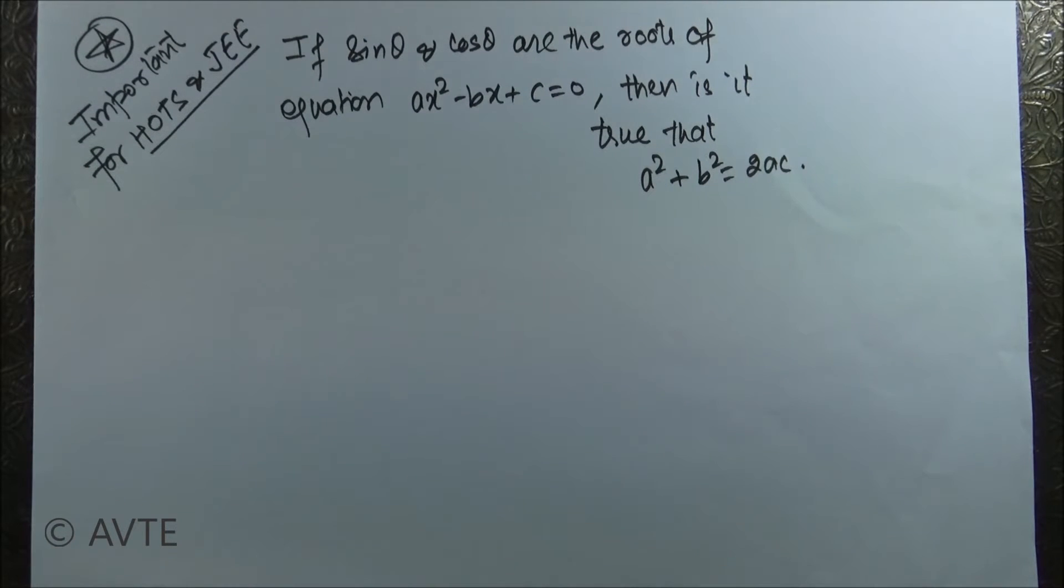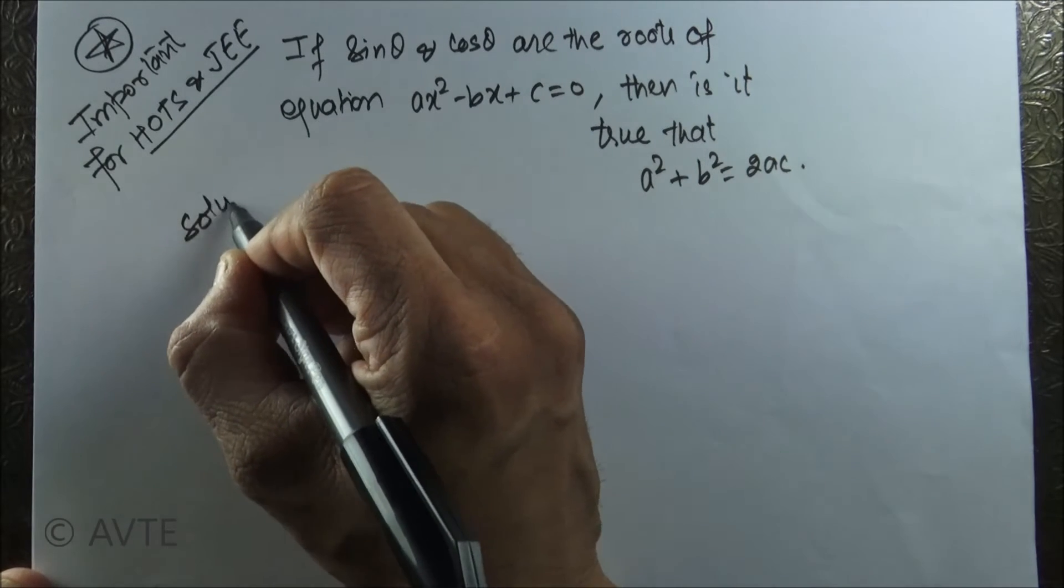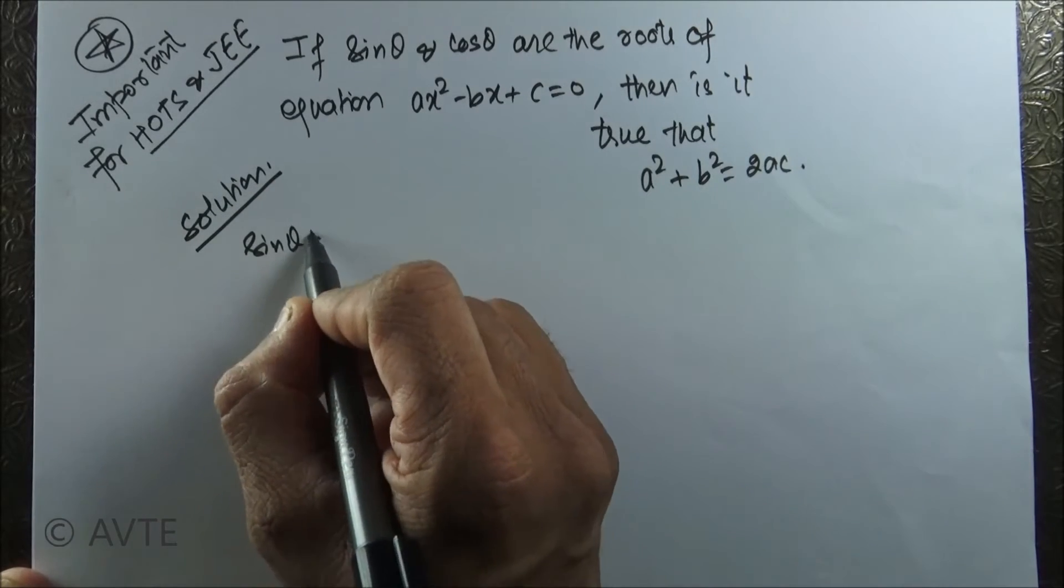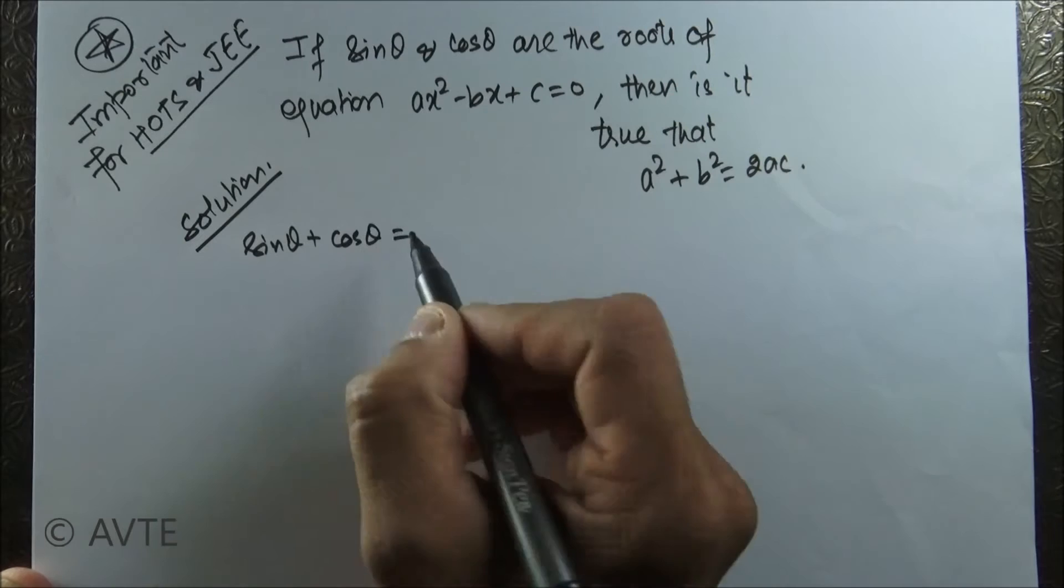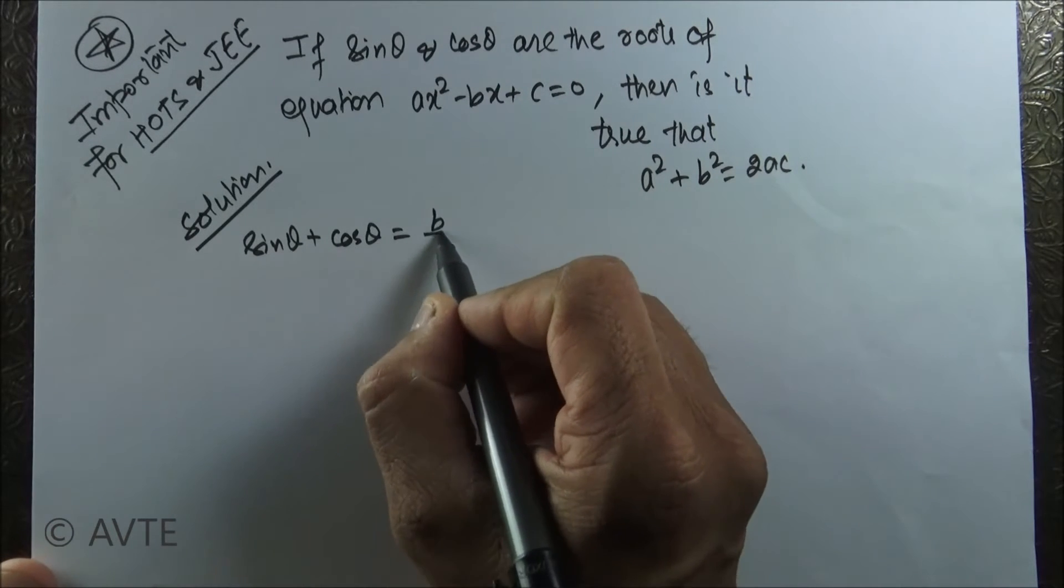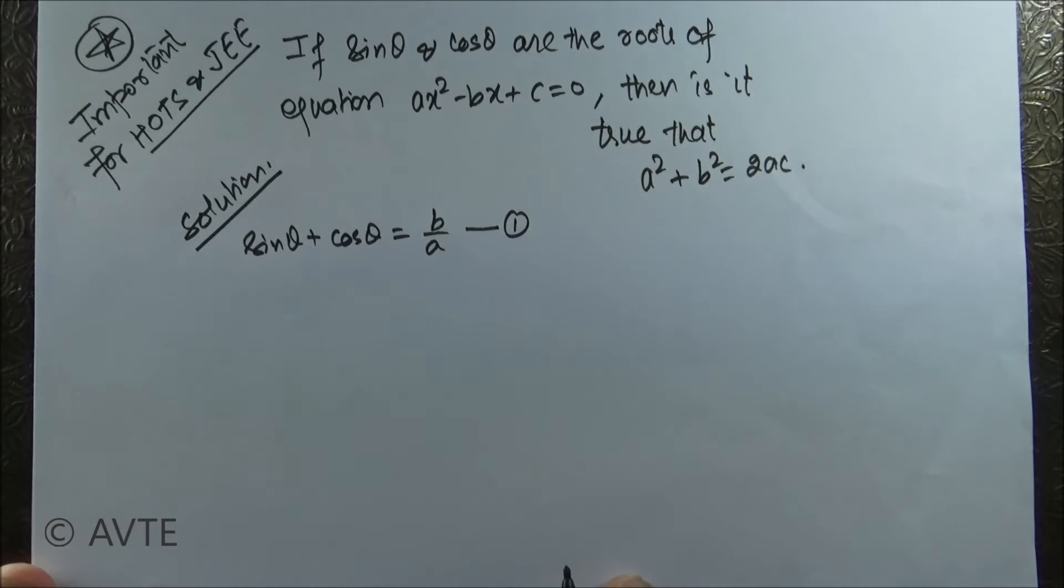Since the question is based on roots, we will think for sum of the roots and the product of the roots. So what is the sum of the roots? Here in this case it is sine theta plus cos theta, and in general it is minus b over a. We already have minus b, so minus and minus will be positive. So this is b upon a. We can write it as equation number one.